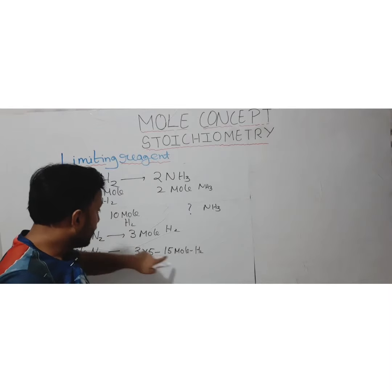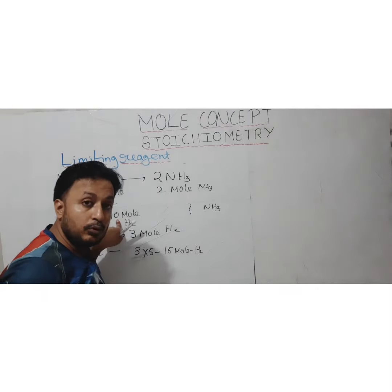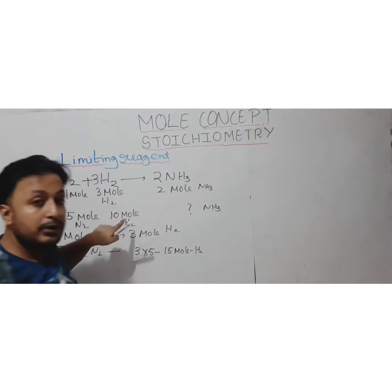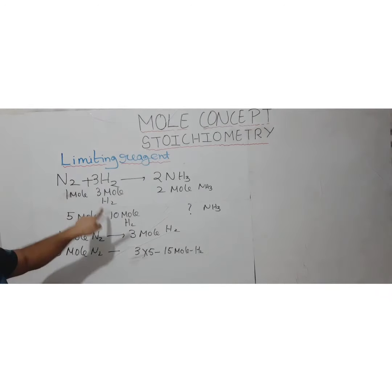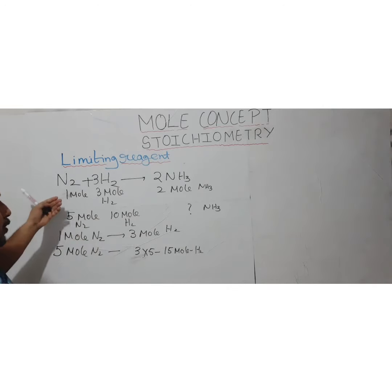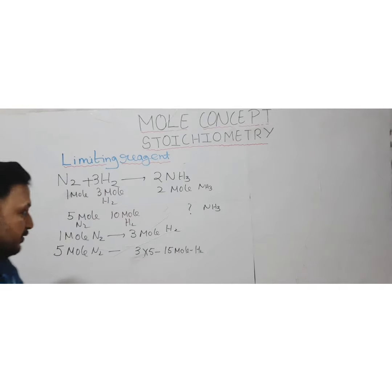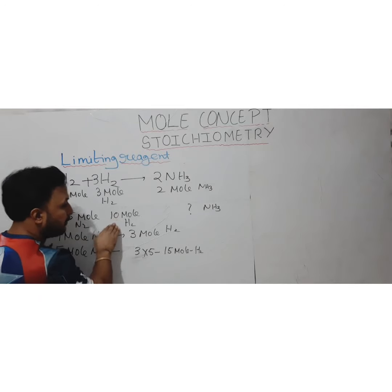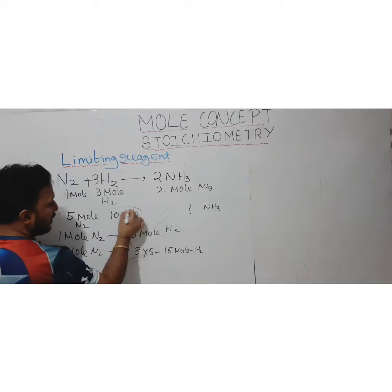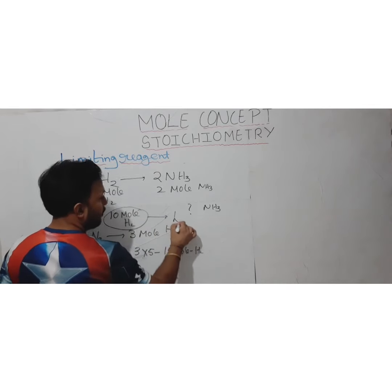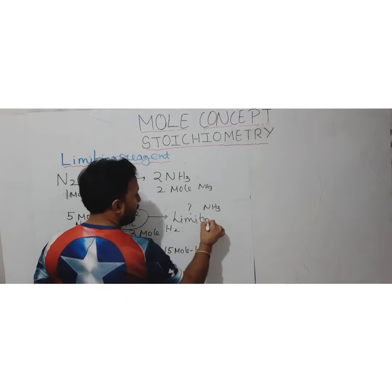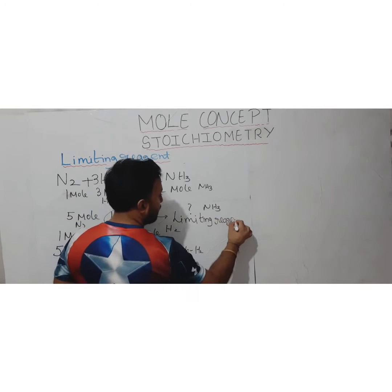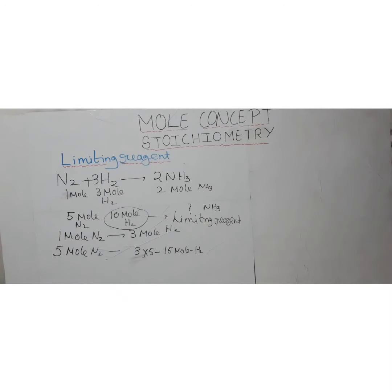The required amount of hydrogen is 15 moles, but we only have 10 moles. This means hydrogen will be consumed before nitrogen during the reaction, and some nitrogen will always be left over. Therefore, hydrogen is the limiting reagent in this case.